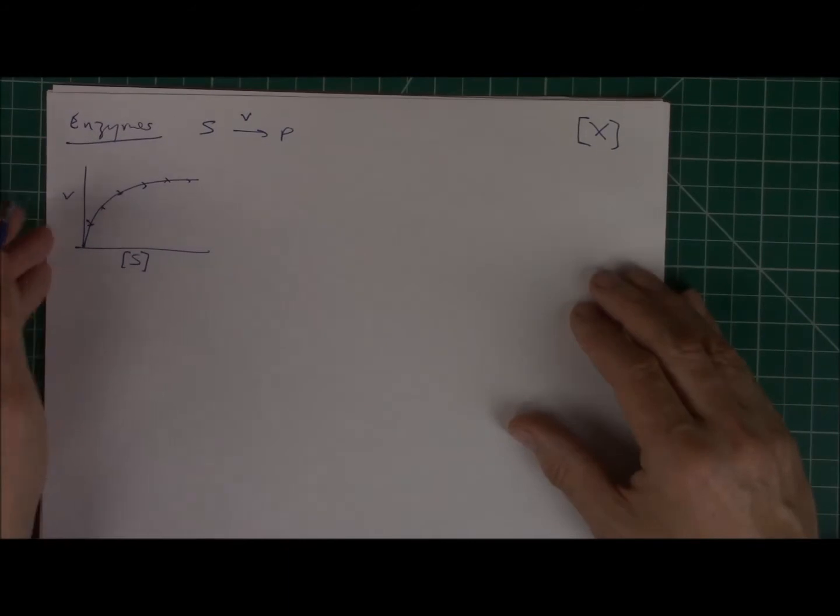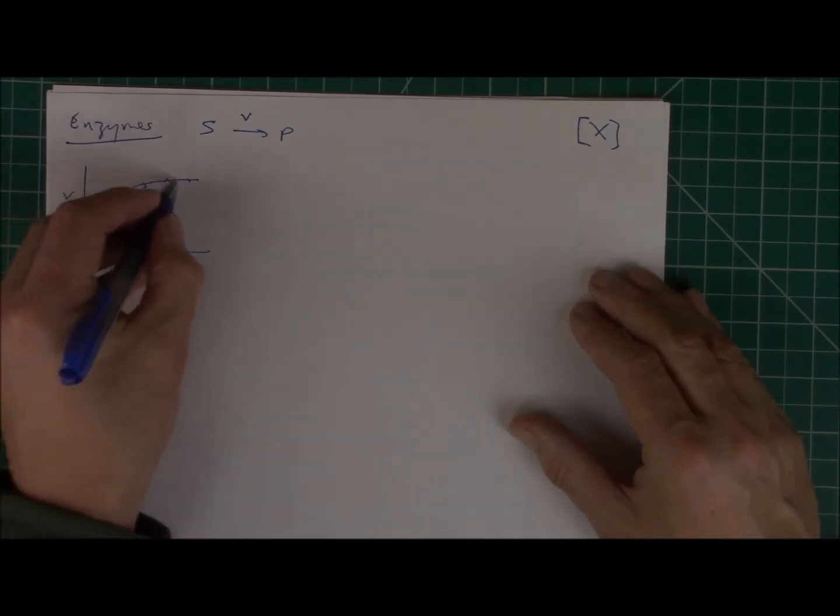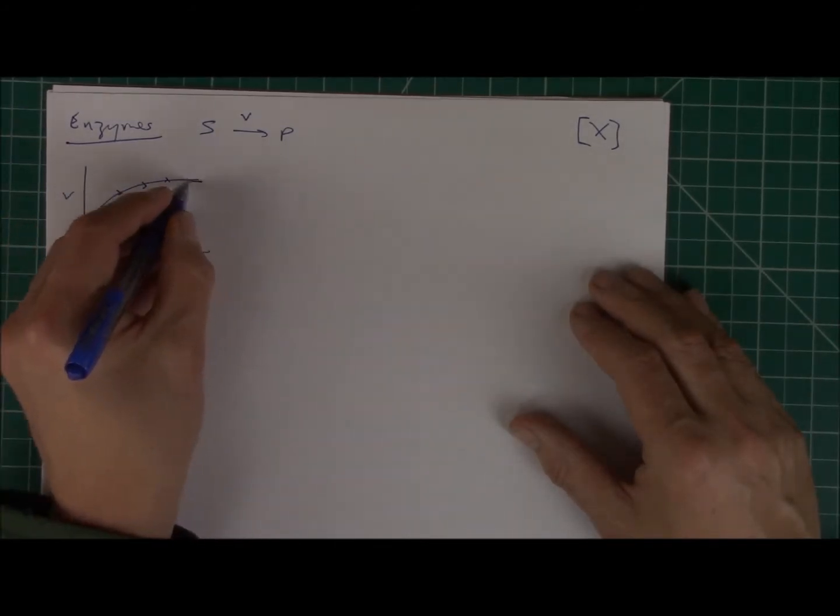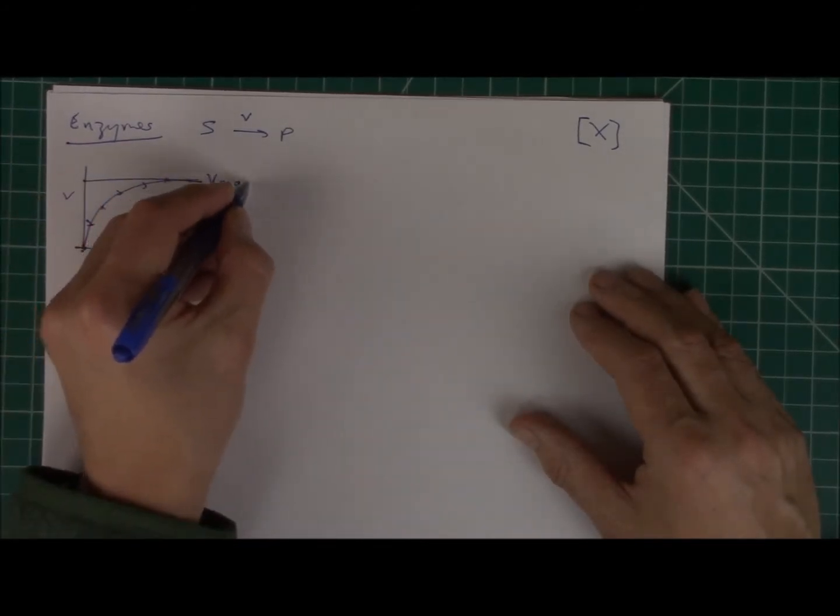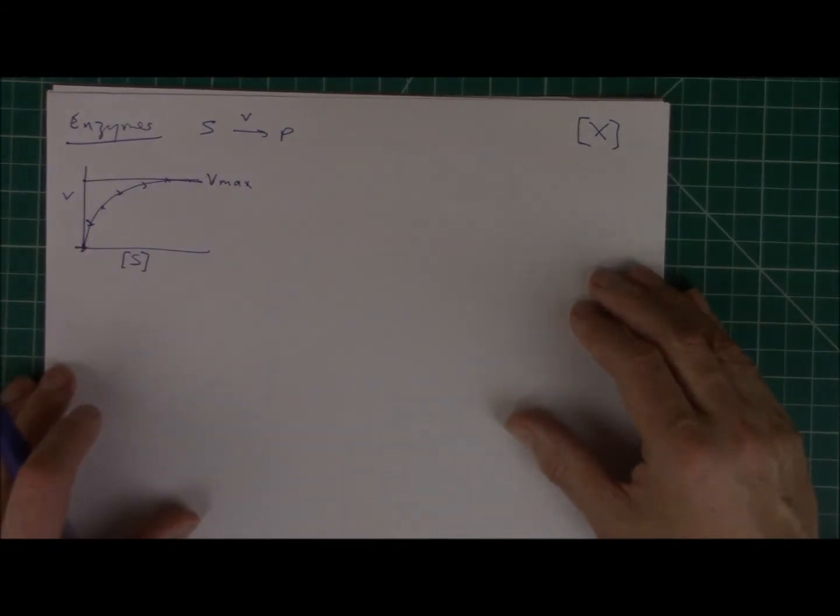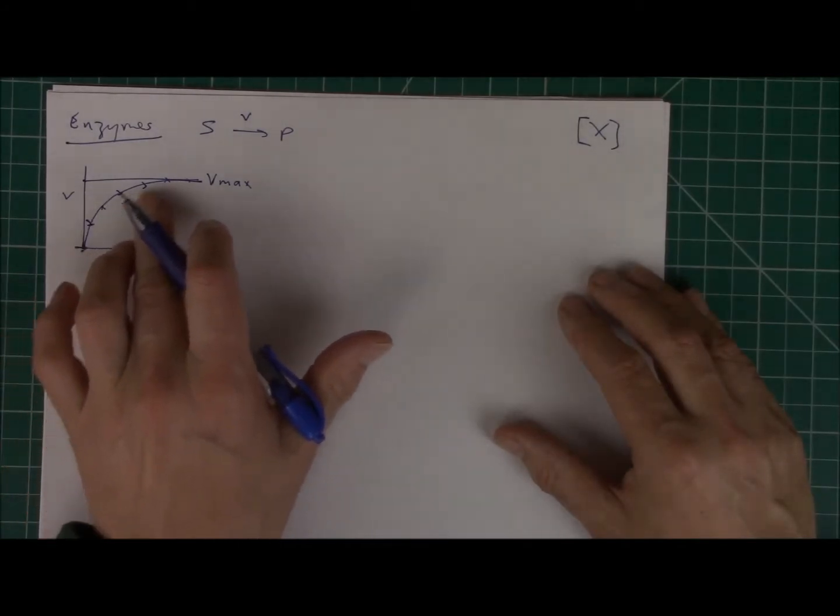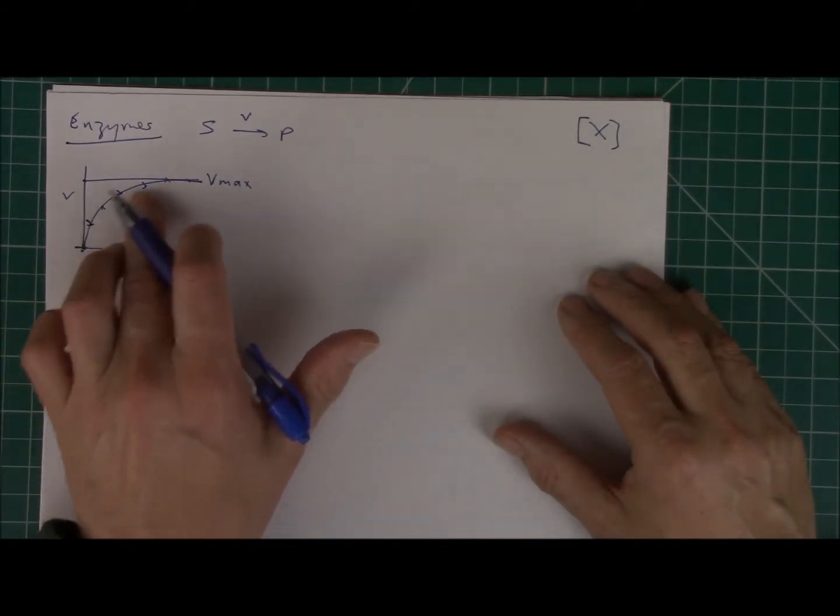So at zero concentration down here, of course, there's zero velocity. It rises linearly and then reaches a plateau, and this plateau is called the Vmax. So the reaction velocity doesn't exceed that maximum velocity. So what I want to do is I want to derive an equation that describes this curve.